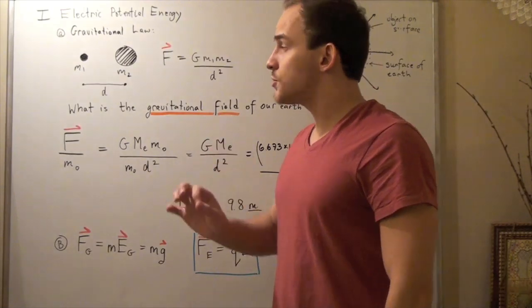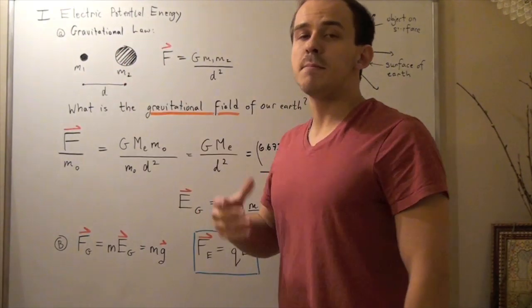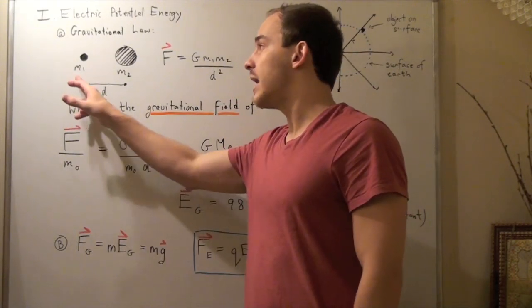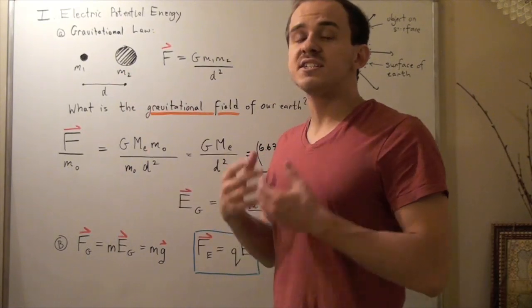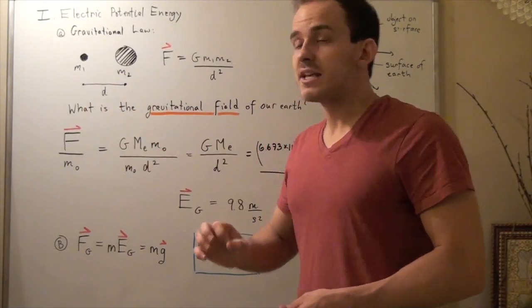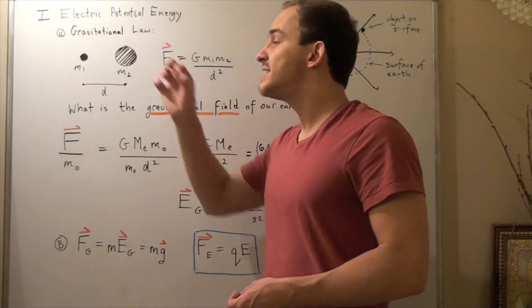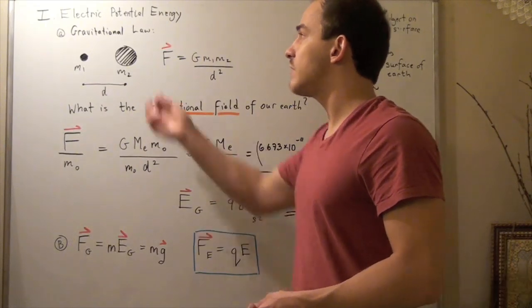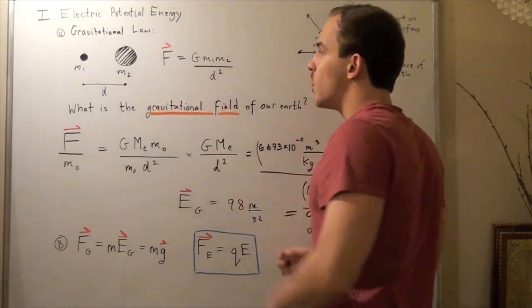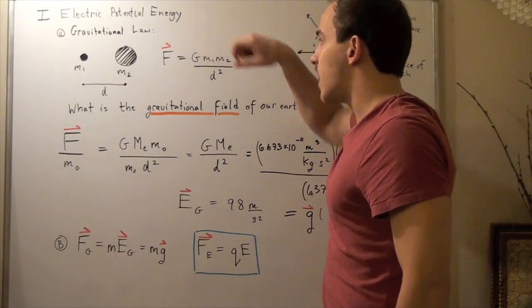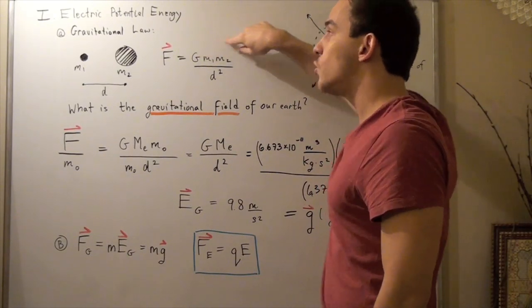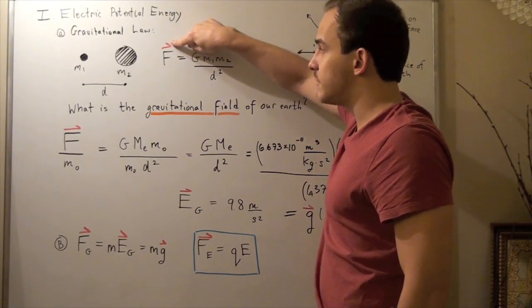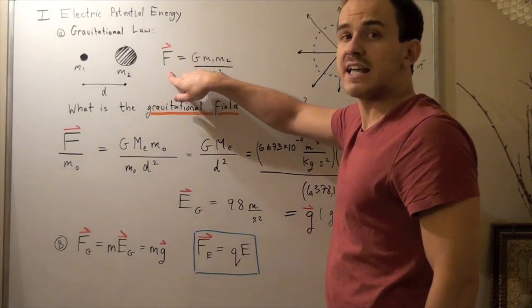Let's first review what the gravitational law tells us about two masses. If we have mass 1, m1, and mass 2, m2, separated by distance r, the force that each mass experiences due to the other is given by the gravitational law: force equals the gravitational constant G times m1 times m2, divided by the distance between them squared. This force is a vector.